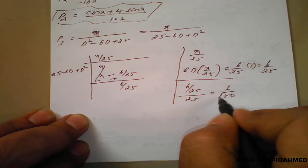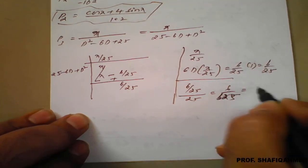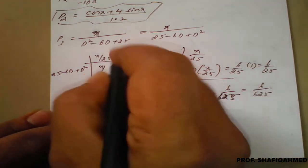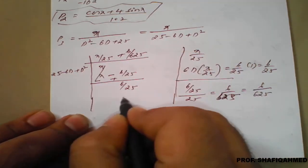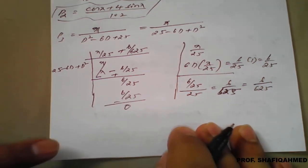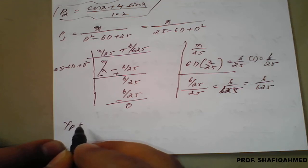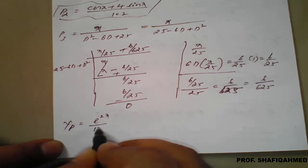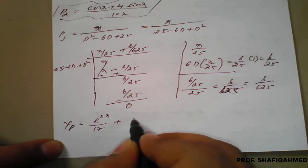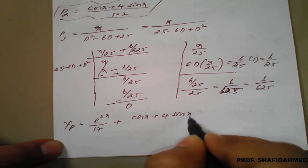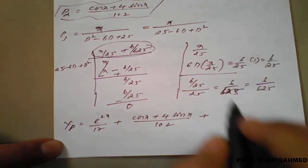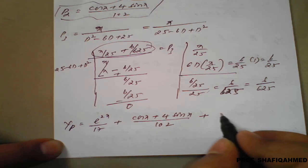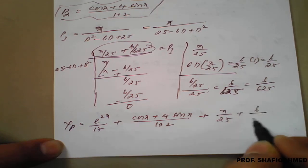Then 6 upon 25 divided by 25 equals 6 upon 625. So our P3 answer is x upon 25 plus 6 upon 625. Therefore, our final Yp is P1 plus P2 plus P3, which gives e raised to 2x upon 17, plus (cos x plus 4 sin x) divided by 102, plus x upon 25 plus 6 upon 625.